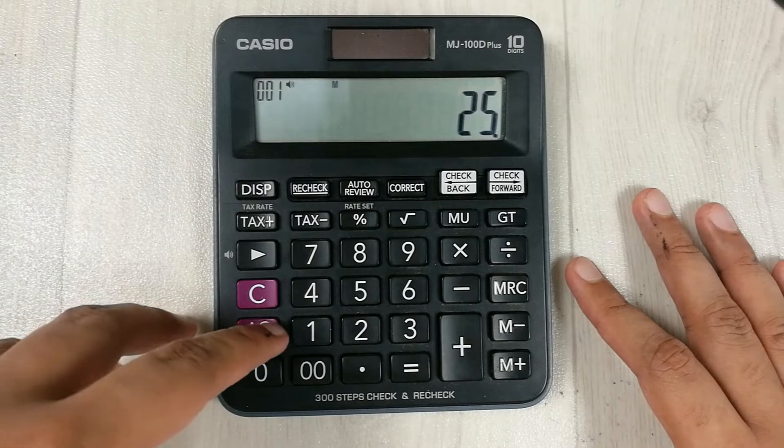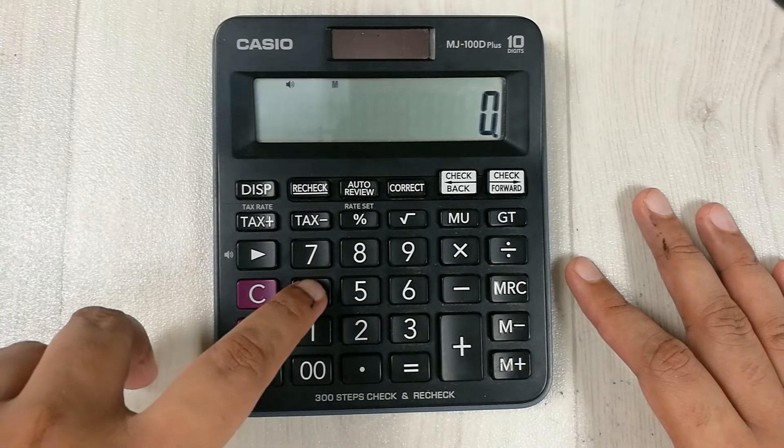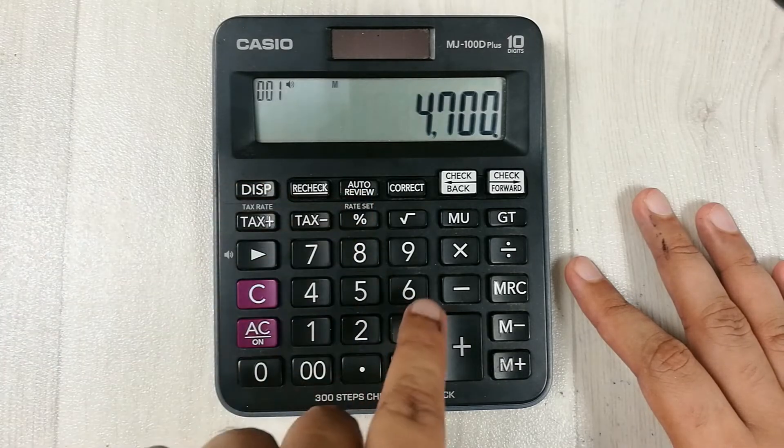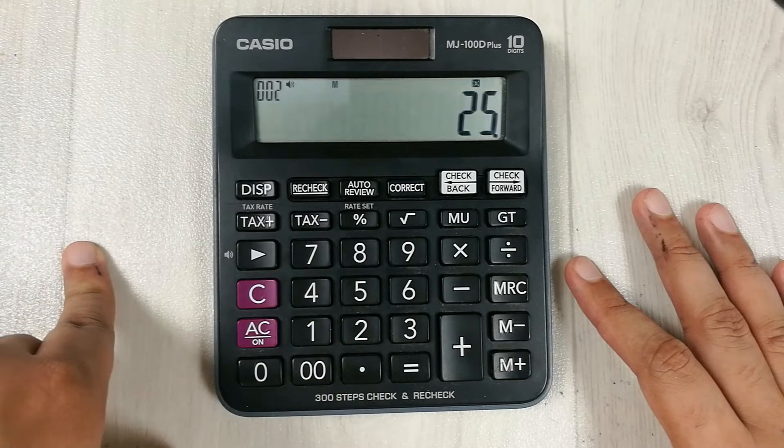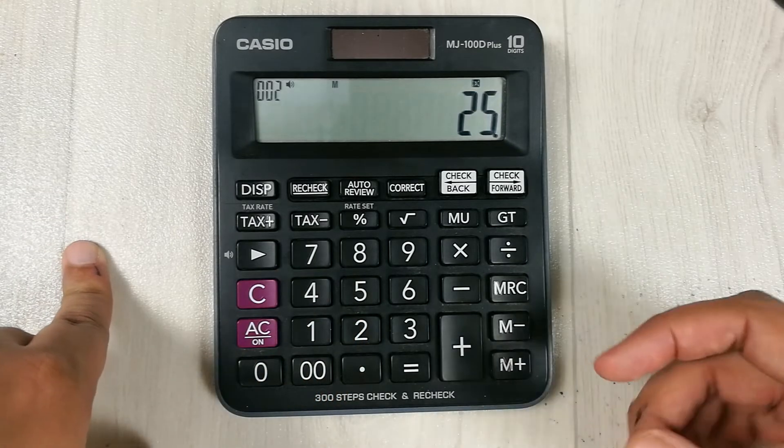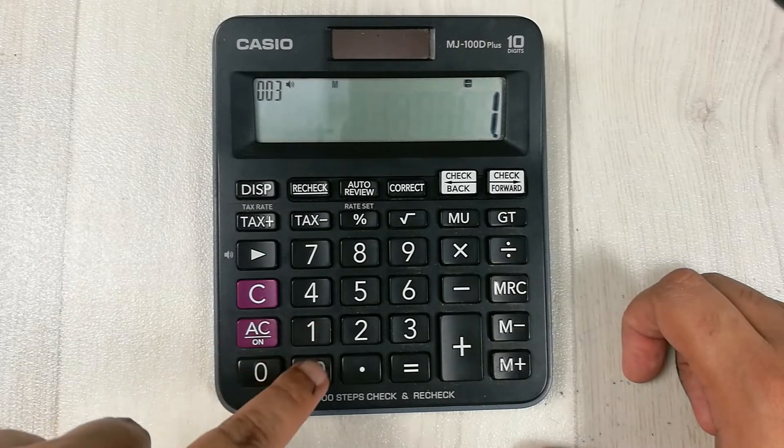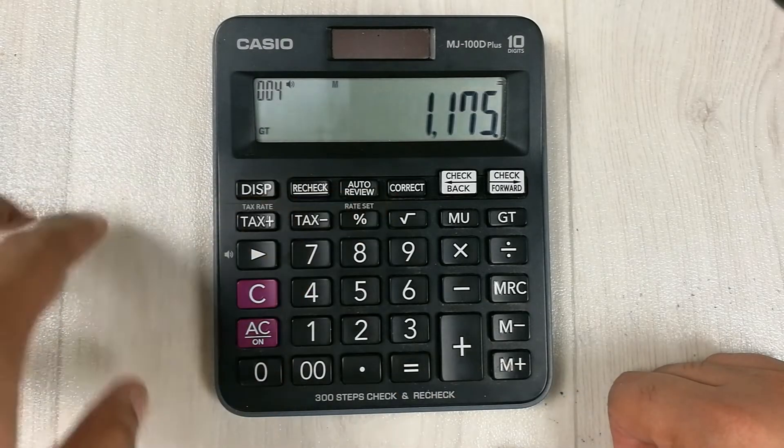What we will do is first of all we multiply 4,700 which was our original price, we multiply it with 25, and then we press this divide button. We divide it with 100 and then we press equal button. So our answer is 1,175.